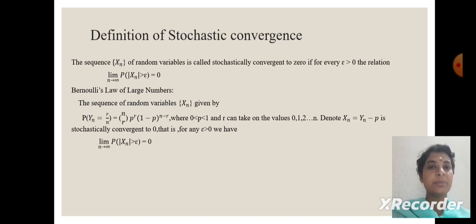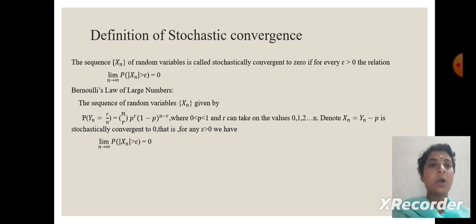Bernoulli law of large numbers: the sequence of random variables x of n is given by the probability of n combination r times p power r times 1 minus p power n minus r, where r can take on values 1 to n. Denote x equal to y of n minus p, which is stochastically convergent to 0.